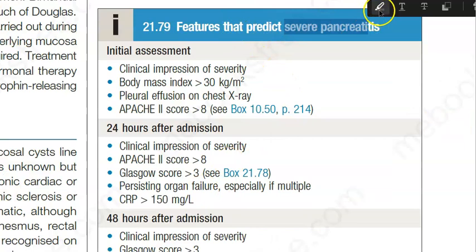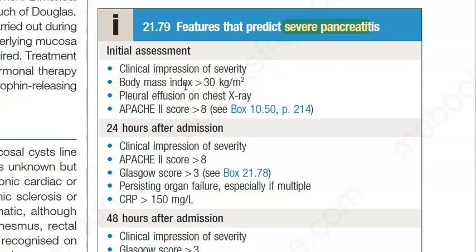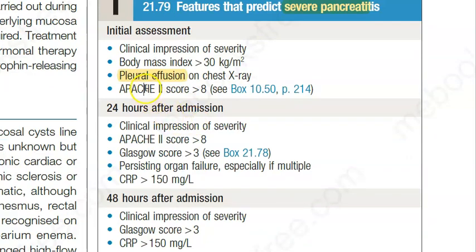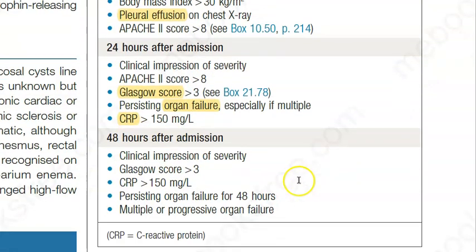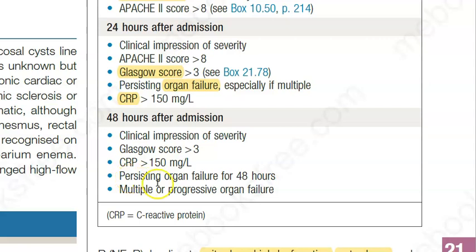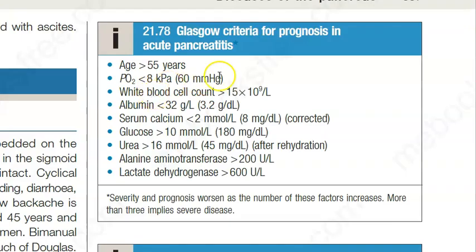Here you can see a large pancreatic pseudocyst compressing the stomach, with an atrophic and calcified pancreas. To assess severity, look at clinical impression, body mass index, pleural effusion, and scoring systems. An APACHE score greater than 8 or a Glasgow score greater than 3 indicates severe disease. Persistent organ failure and elevated CRP also indicate severity.